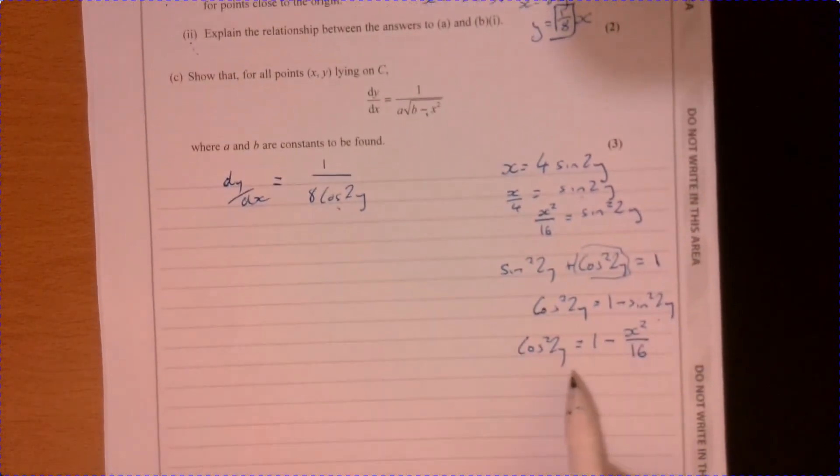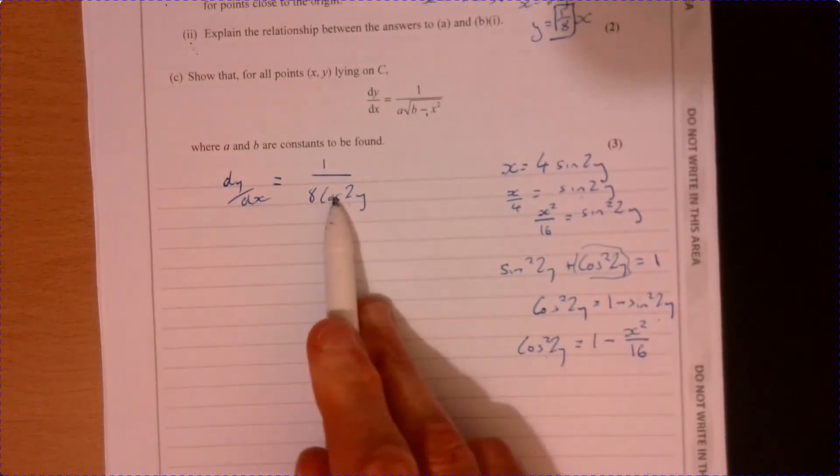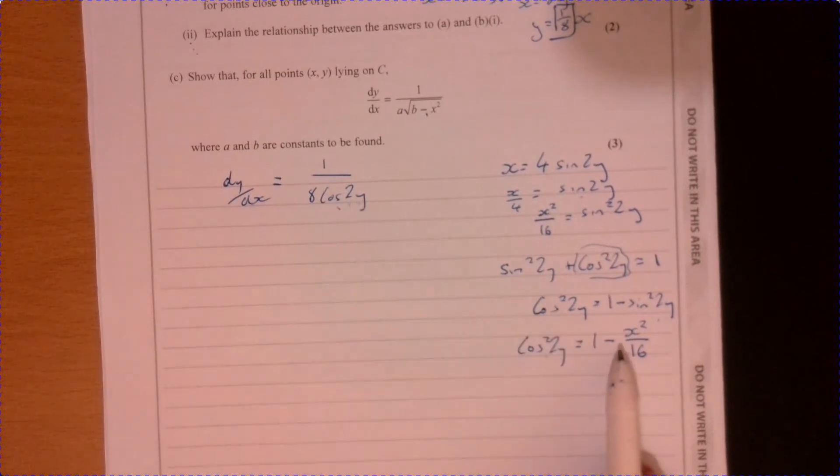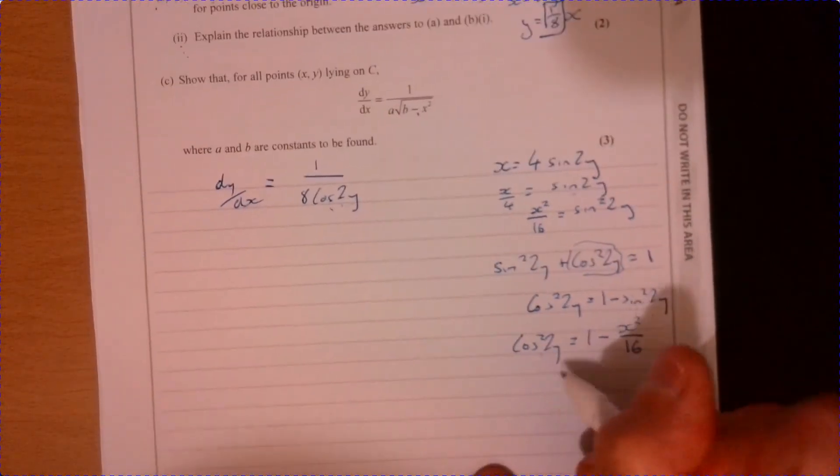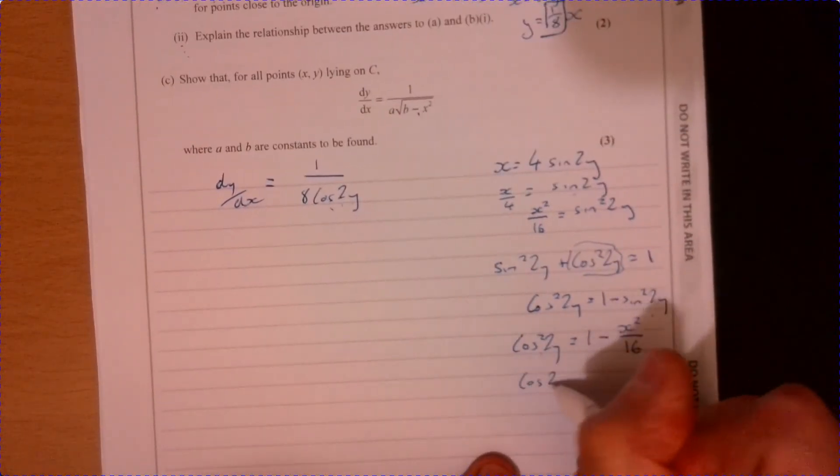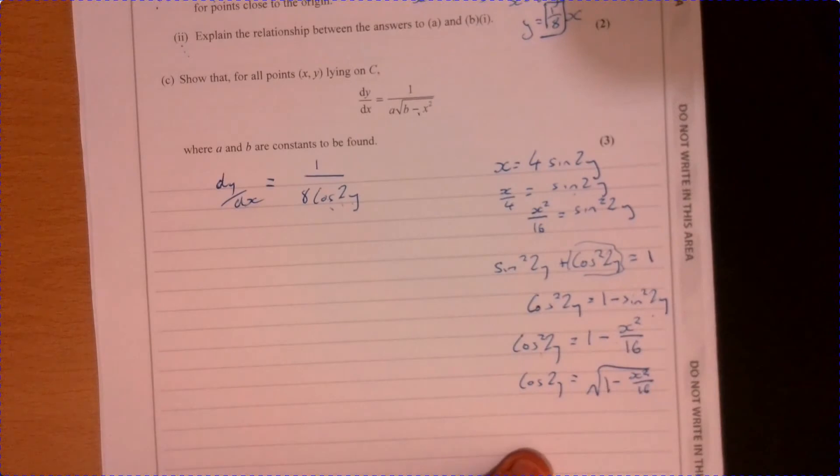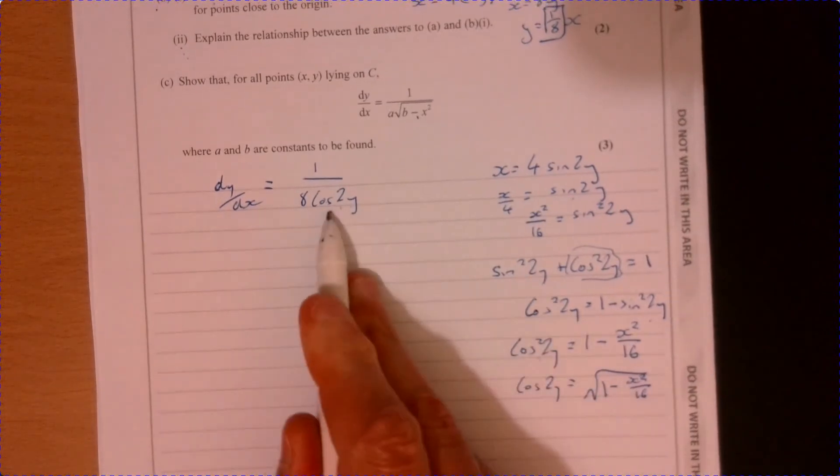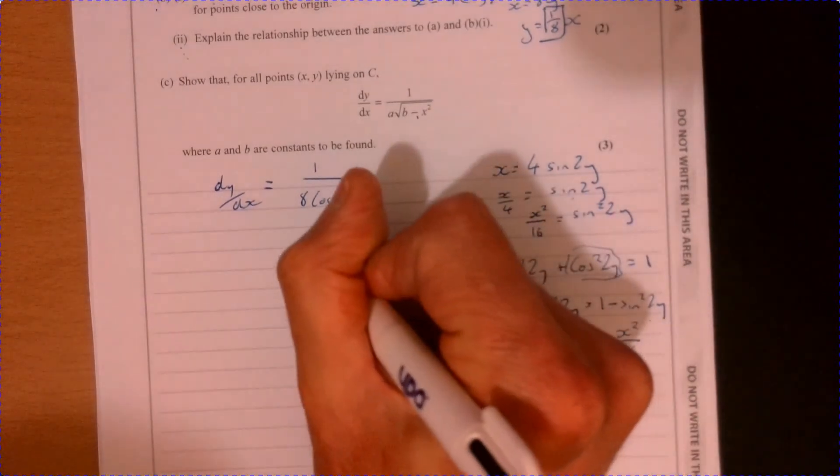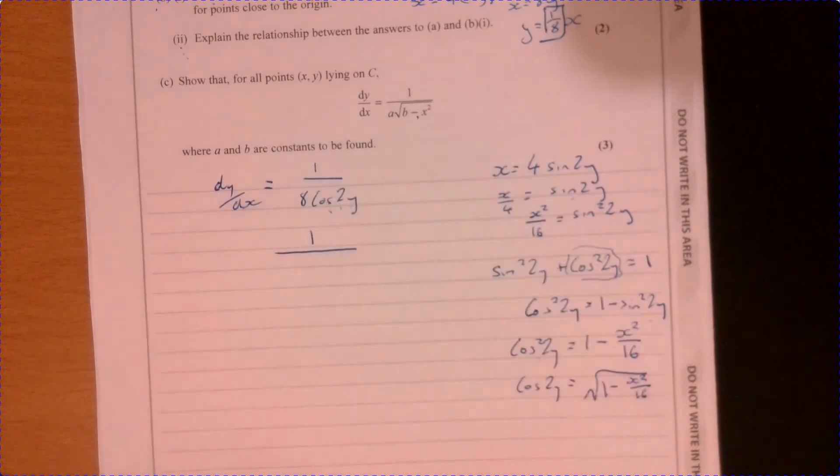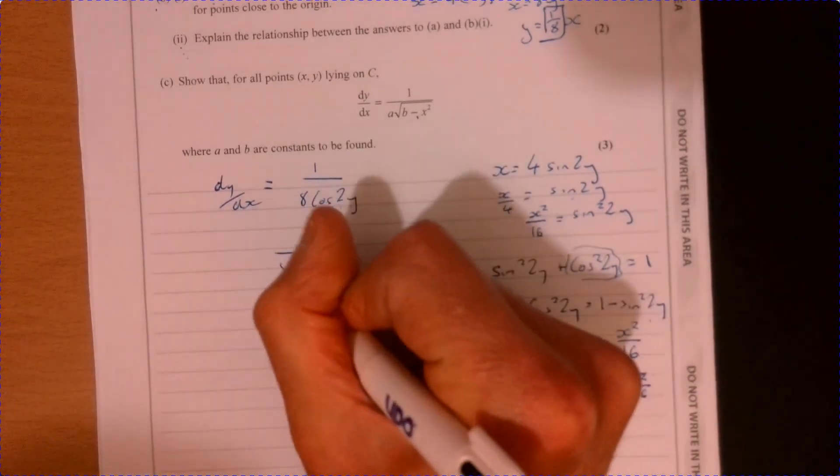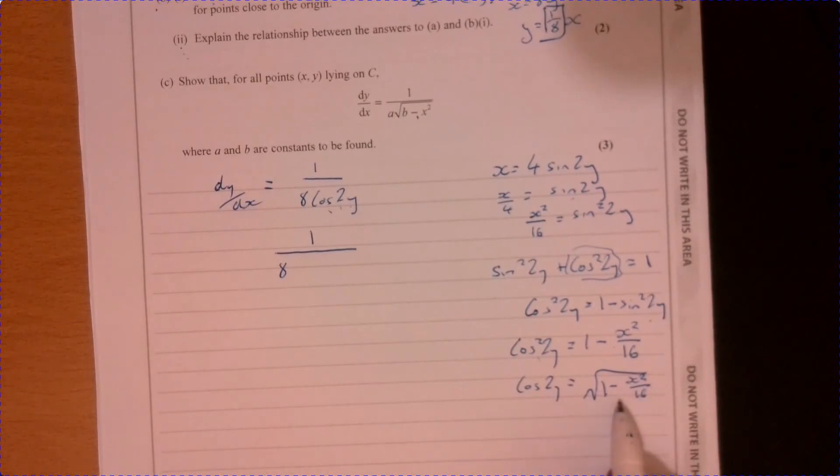Now, I don't want cos squared 2y. I want cos 2y. So that's going to be the square root of this. So cos 2y will equal the square root of this here. So let's just take this and pop it over here. So that gives us 1 over 8 times this here.